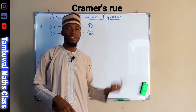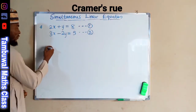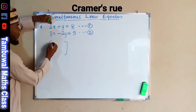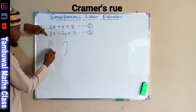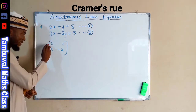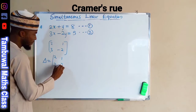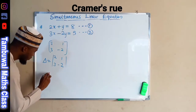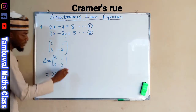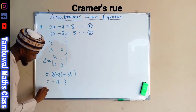Cramer's Rule is another method of solving simultaneous linear equations using matrices. First, form a matrix of the coefficients of the unknown variables. The coefficients are 2 for X and 1 for Y in the first equation, and 3 for X and negative 2 for Y in the second equation. Then find the determinant of this matrix: 2 times negative 2 minus 3 times 1.